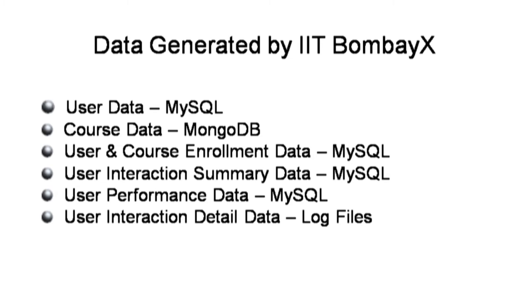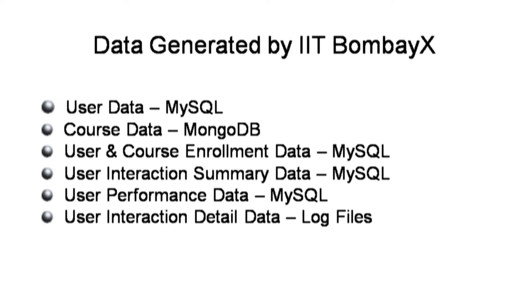Next is user performance data — that is, what grade a user received after completing the course. If they appear in exams, they'll be graded and those grades are available in the MySQL database. Finally, there is user interaction detailed data, which are the application log files generated on the server. These are the main data sources.